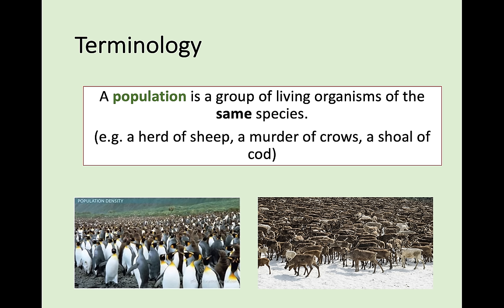Next, we're looking at the term population. We can also look at populations within communities. A population is a group of living organisms of the same species. That's where population and community differ — a community is all the living things in an area, whereas a population is all the living things of one species. For example, a herd of sheep, a murder of crows, a population of penguins or reindeer.